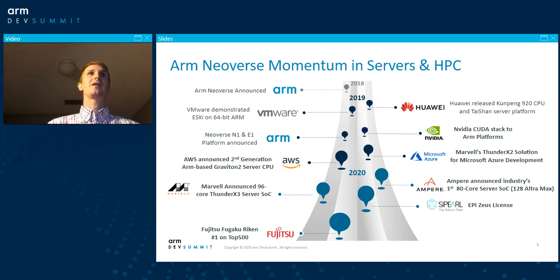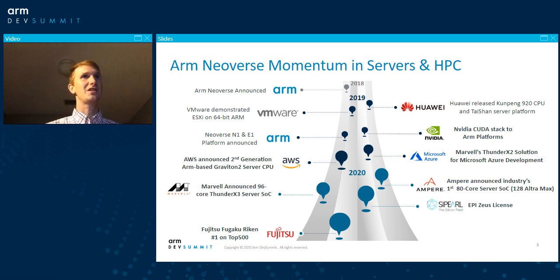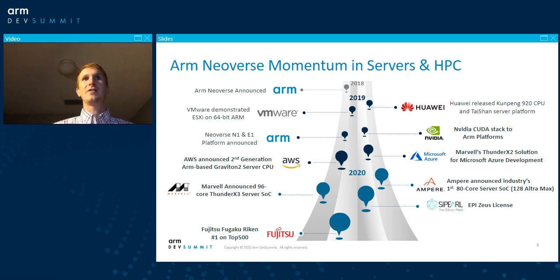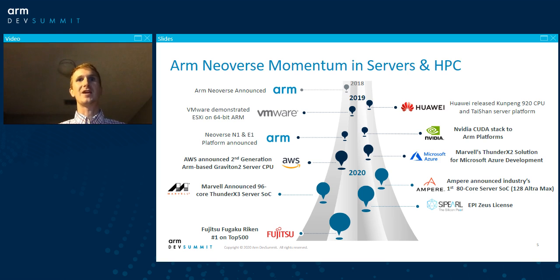Shortly after that, AWS announced the Graviton2 server CPU, off the back of the very successful Graviton1. Graviton2 brings further performance improvements, which Stephen will detail in a moment. The most recent major development for ARM and HPC is that currently the fastest supercomputer in the world, according to the HPL benchmark, is the Fujitsu Fugaku system at Riken in Japan. Fugaku implements the ARM architecture — the fastest supercomputer in the world is using the ARM instruction set architecture on a custom Fujitsu microarchitecture. This really demonstrates the power of ARM as a platform for HPC.